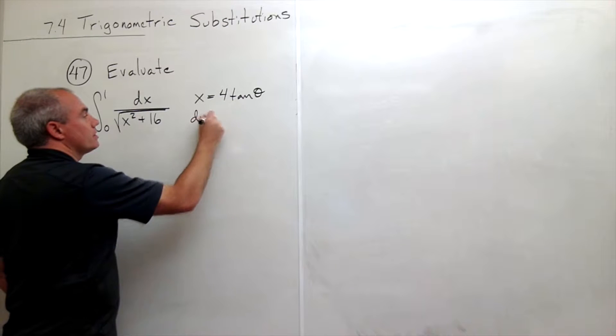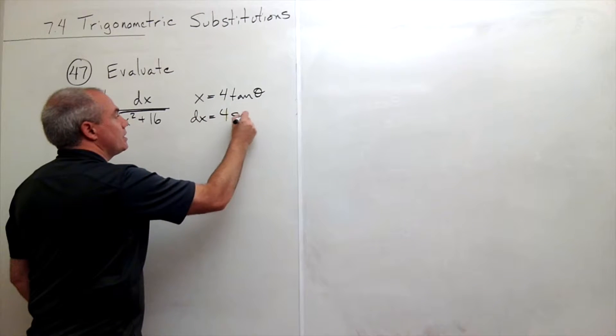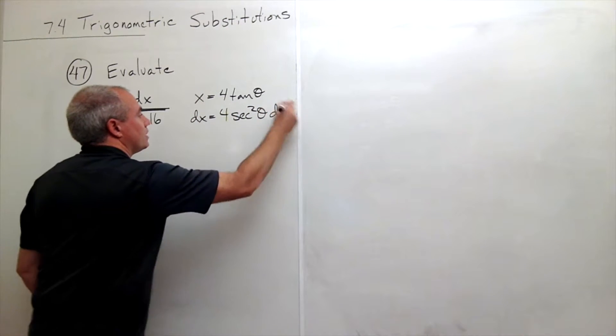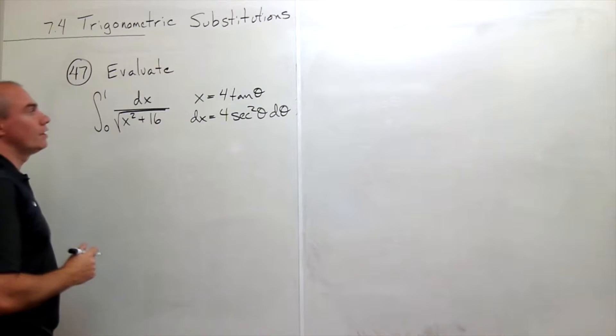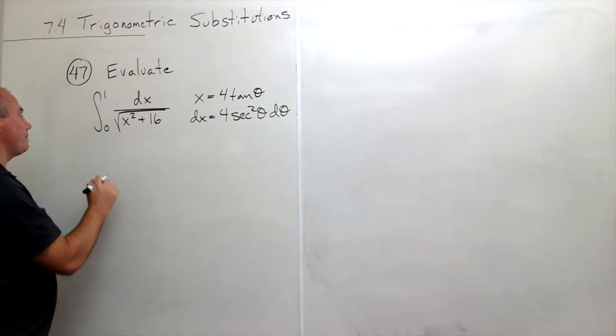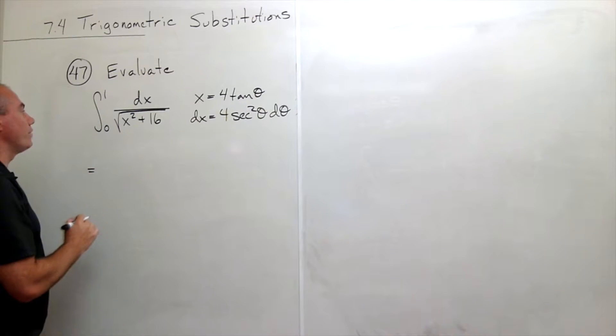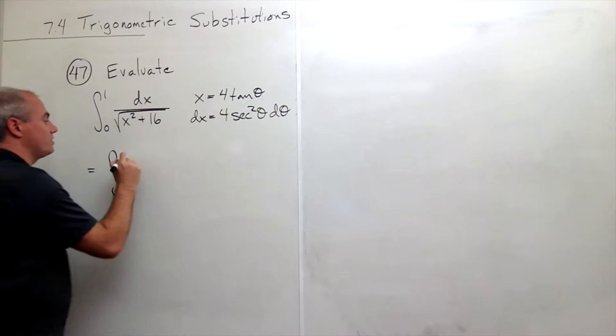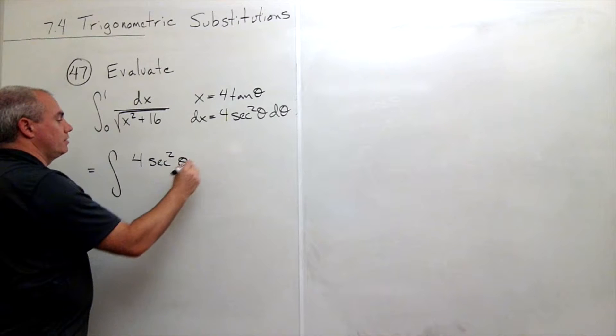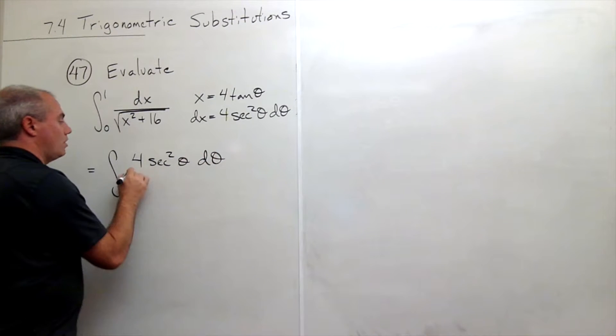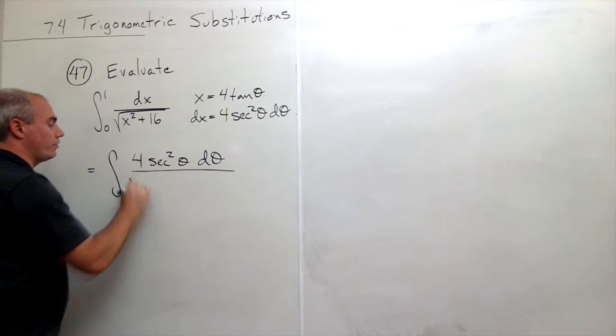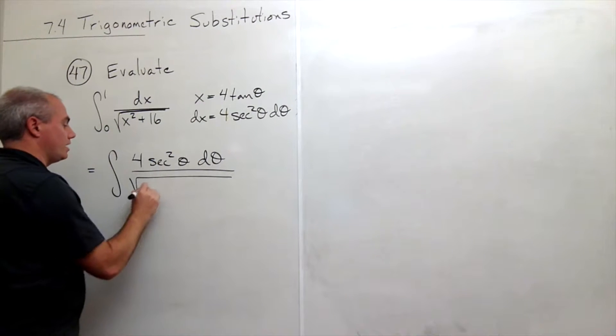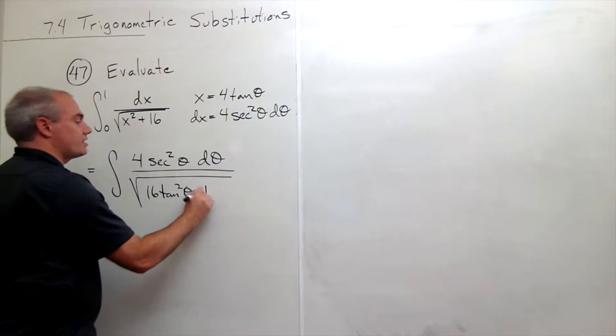So dx is equal to 4 secant squared theta d theta. I've got my substitution set up, so let's do it. I can rewrite this as the integral of dx, but now dx becomes 4 secant squared theta d theta all over the square root of x squared, which would be 16 tangent squared theta plus 16.